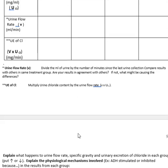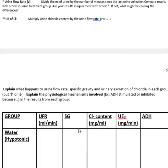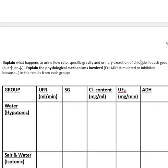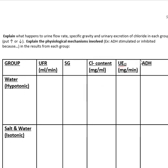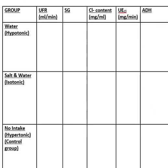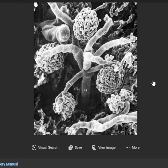Then do the same table with someone who had the salt — they ate the potato chips — the person who had the tomato juice, and the person who drank distilled water.